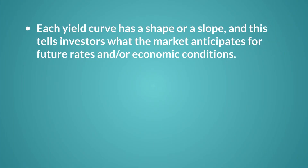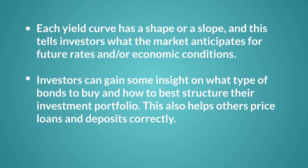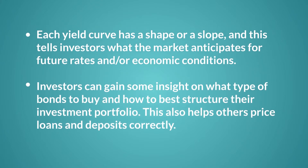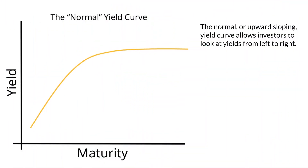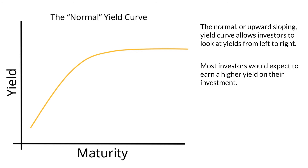Each yield curve has a shape or slope, and this tells investors what the market anticipates for future rates and or economic conditions. By analyzing the yield curve and its shape, investors can gain some insight on what type of bonds to buy and how to best structure their investment portfolio. This also helps others price loans and deposits correctly. There are four different yield curve shapes based on the market and economic conditions: normal, steep, flat, and inverted. The normal, or upward sloping yield curve, allows investors to look at yields from left to right. It's called the normal yield curve because most investors would expect a higher yield on their investment as they move out the yield curve and invest in bonds with longer maturities.